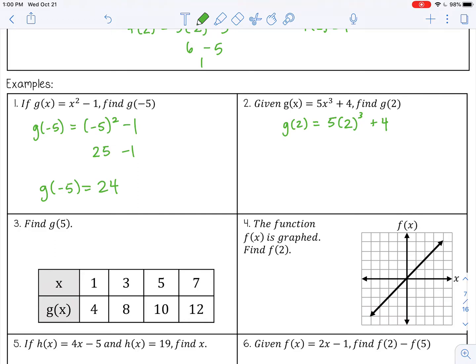Here I'm going to do the exponent first. So 2 cubed, that's 8. So 5 times 8 is 40 plus 4. So g of 2 is 44.